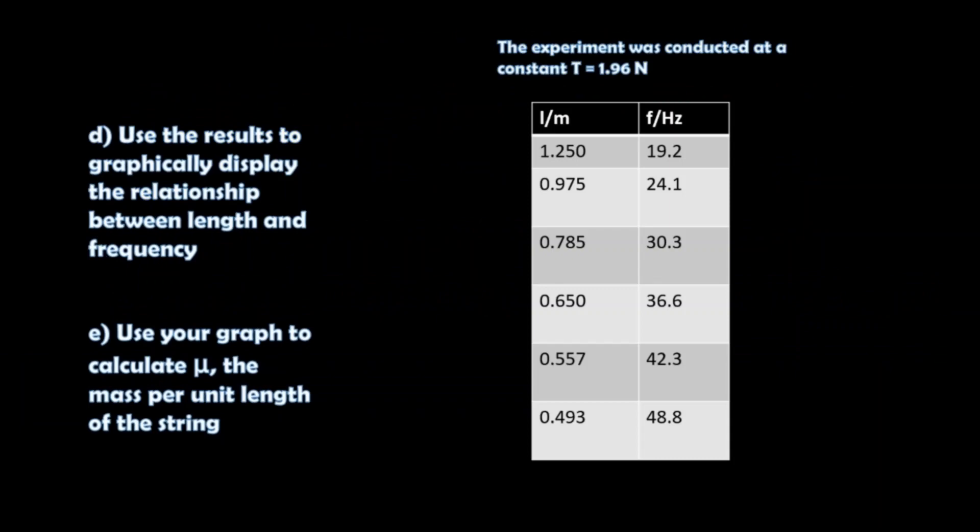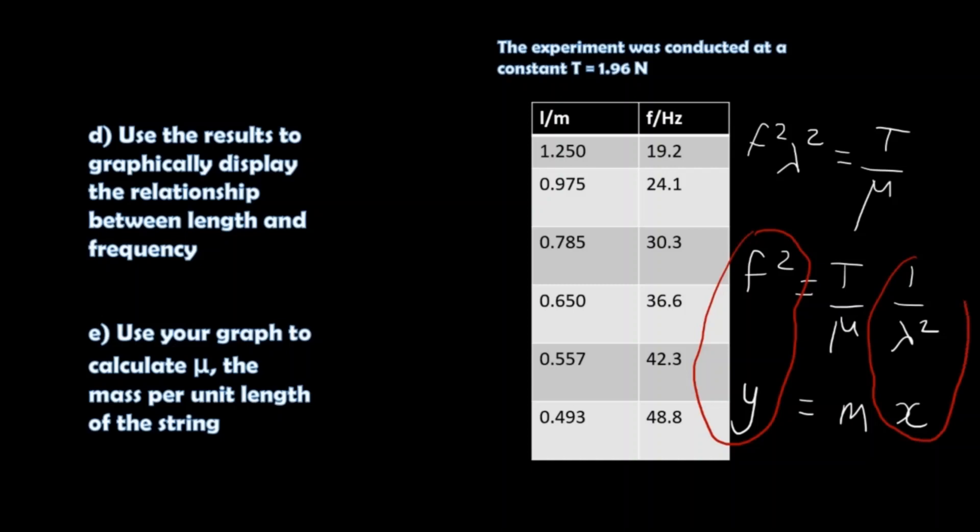Use the results shown here to graphically display the relationship between length and frequency. So the best way to do this is to actually go back to the equation that we derived earlier. So frequency squared times wavelength squared equals tension divided by mass per unit length. So if I make frequency squared the subject of the formula, I can write this relationship like this. So if I plot frequency squared on the y-axis and 1 over lambda squared on the x-axis, I have a line with the relationship y equals mx. So I should find a straight line passing through the origin with gradient equal to tension divided by mass per unit length.